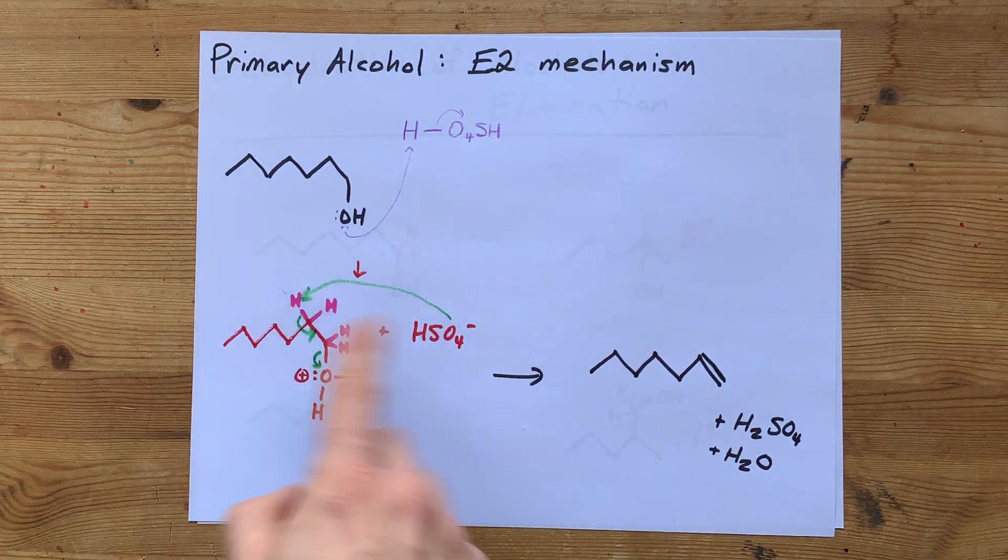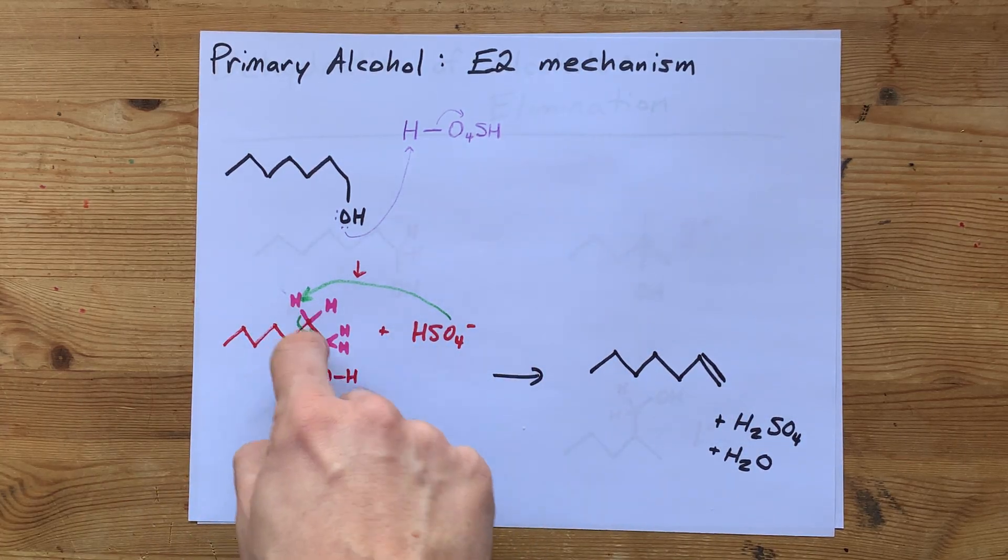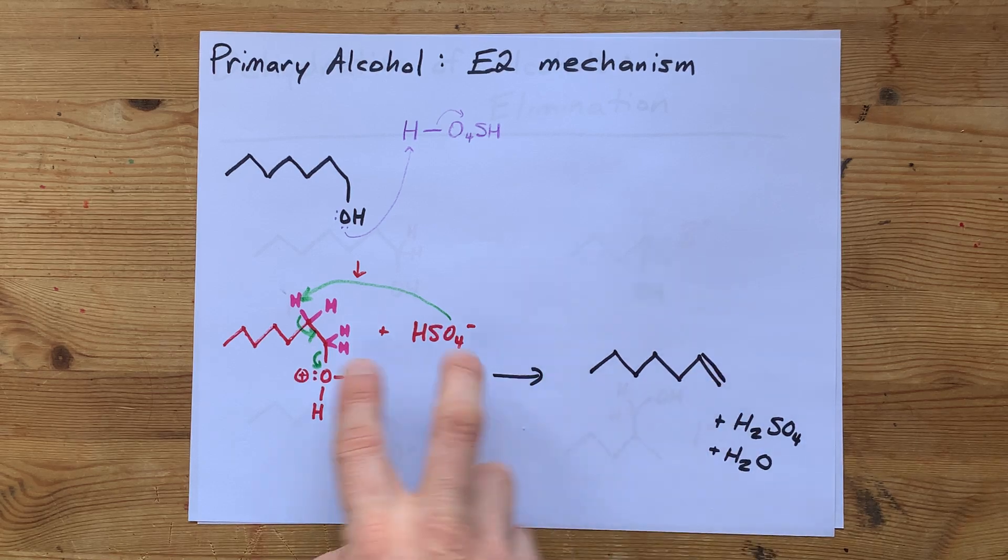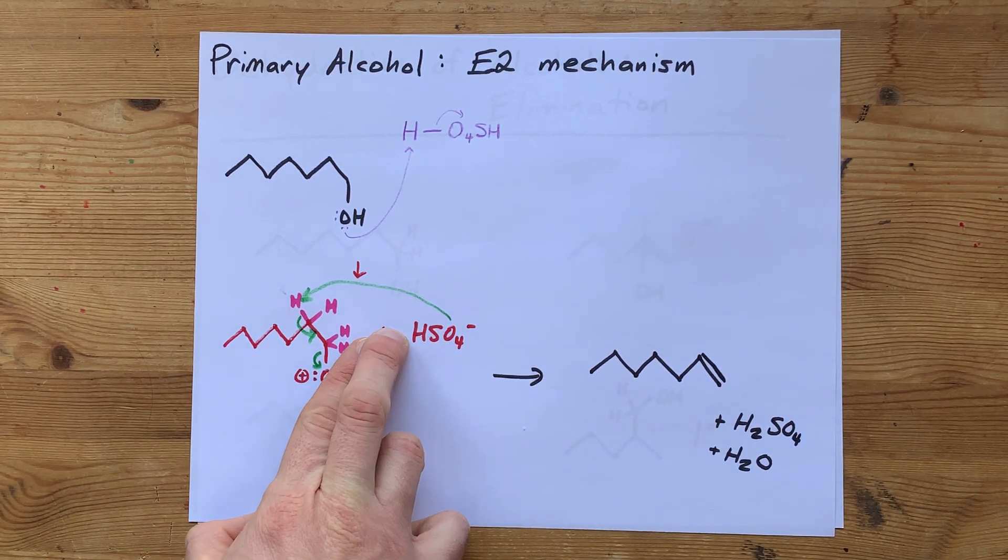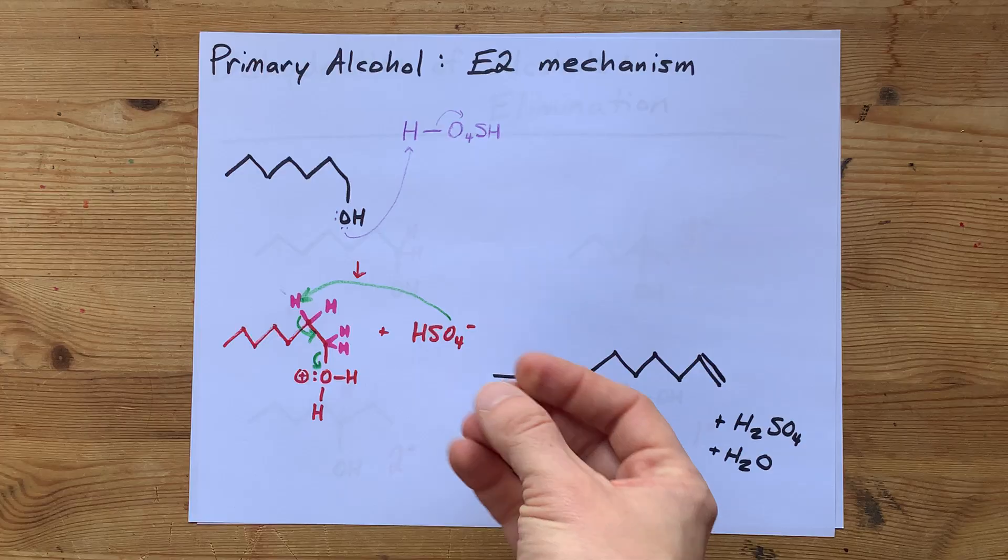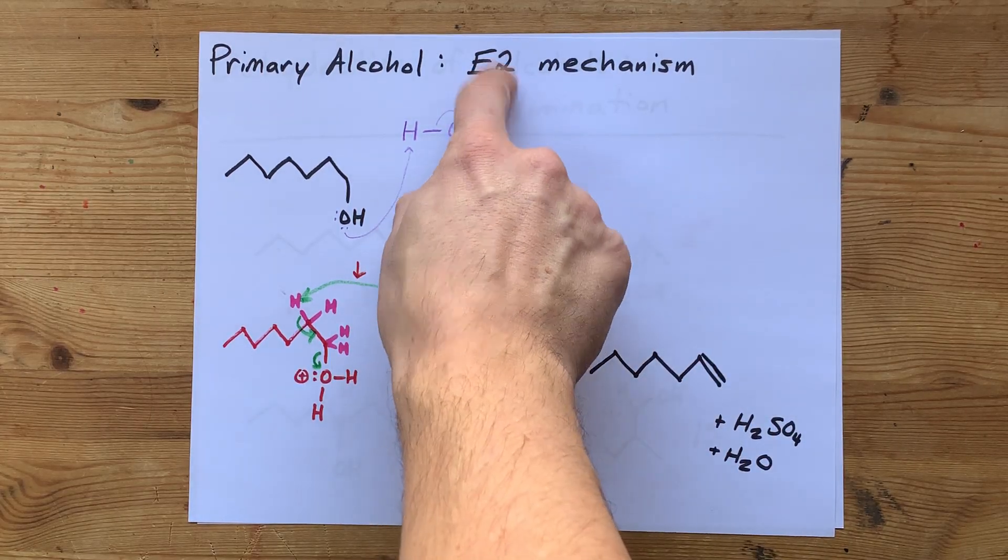Please note that in what I believe is the rate determining step, which is this one to that one, you have two molecules colliding. That makes it a bimolecular reaction, and that's why it's called E2.